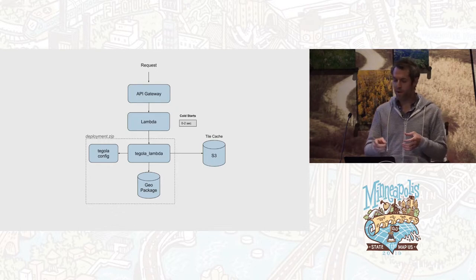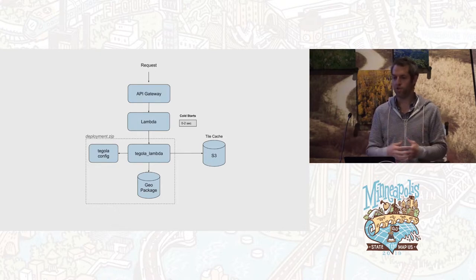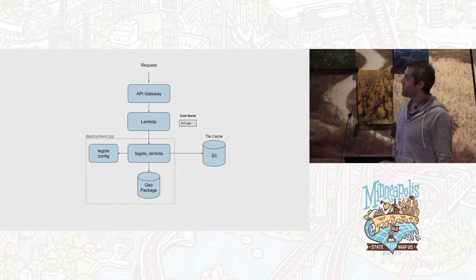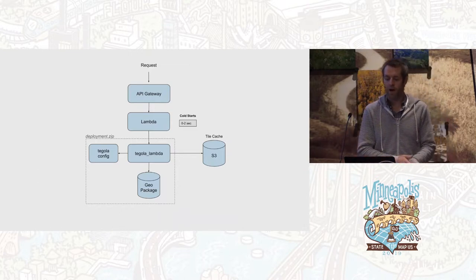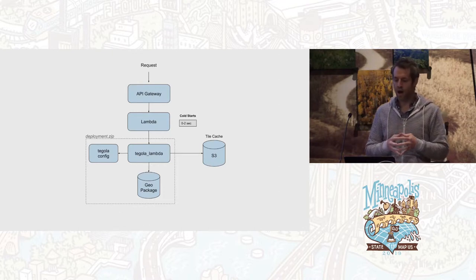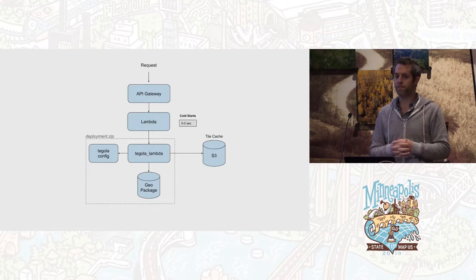If the tile was already in the cache, it fetches it from S3 without going through all the geoprocessing and encoding. There's a cold start time of around zero to two seconds on Lambda — relatively negligible overall, since you'll spend more time on geoprocessing and encoding for a fresh tile that isn't in the cache yet.